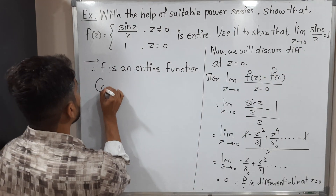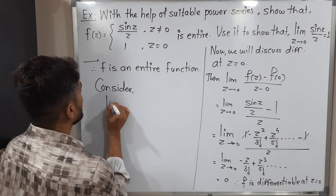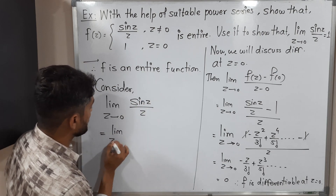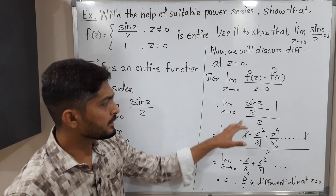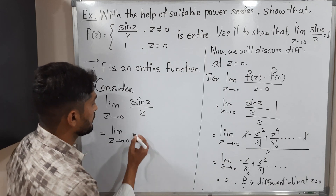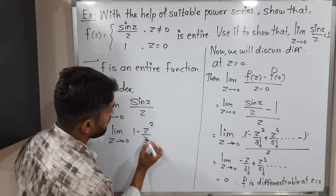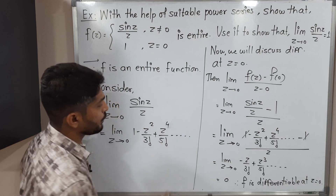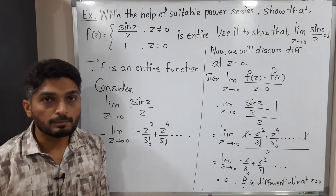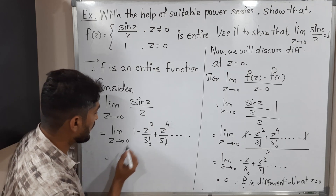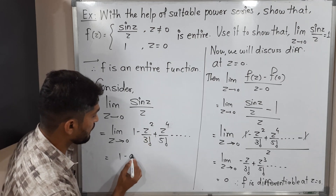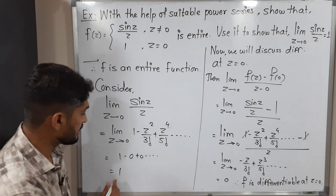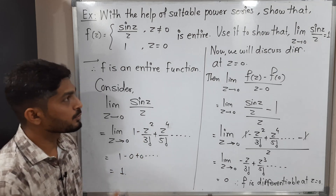After that, we have to find the value of the limit. Let us consider the limit as z tends to 0 of sin(z)/z. This equals the limit as z tends to 0 of the series we already calculated: 1 − z²/3! + z⁴/5! and so on. Applying the limit by substituting z equal to 0: the constant 1 remains as is, and all remaining terms become 0. So finally we get the value of the limit is 1.